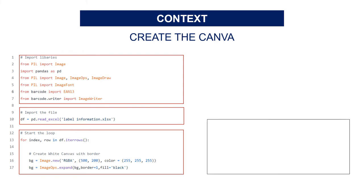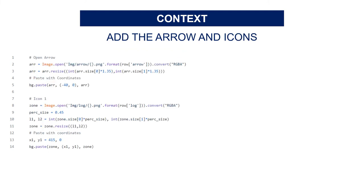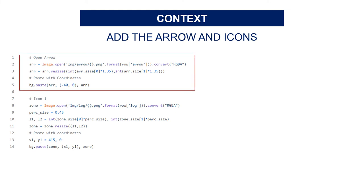At the end you have this white rectangle. In the loop, we start by generating this white rectangle and adding a border of thickness 1 in black. Then you continue the loop by adding items. You add the colored arrow, select the type from the arrow column, resize it, and paste it using the coordinates minus 40 and 0.